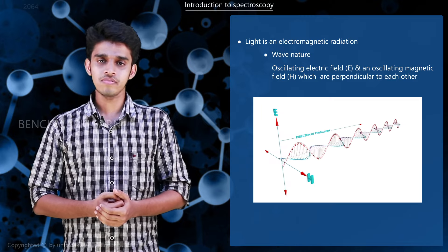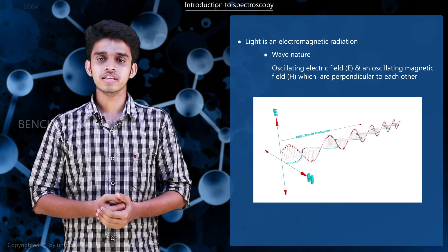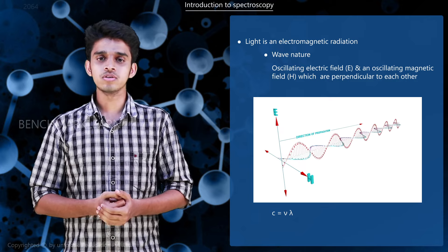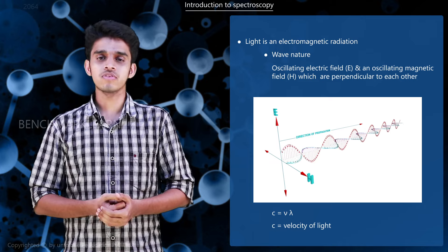The relationship between wavelength and frequency of oscillation of the wave can be written as c = ν × λ, where c is the velocity of light.